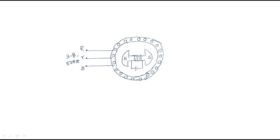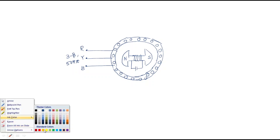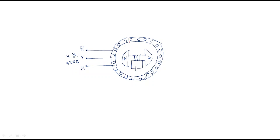Three-phase 50Hz AC supply - the R, Y, B three-phase AC supply is given. Then the pole formation is done. For a two-pole system for example, initially here the north pole and here the south pole. Whenever three-phase supply is applied, the flux will rotate with the synchronous speed. The stator flux, or stator rotating magnetic field, rotates with synchronous speed Ns. The north pole and south pole are also rotating with the synchronous speed.